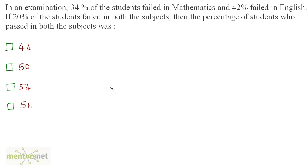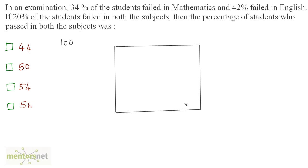In an examination, 34% of the students failed in mathematics and 42% failed in English. Let us consider that the total number of students in this class was 100. Now let us draw a Venn diagram — this rectangle consists of all of the students, which are 100 in number.